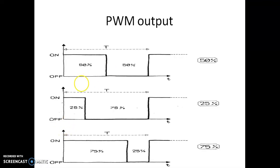This is what is PWM output, so we are talking about analog output. Because this is a digital circuit, it cannot give analog output in the form of 1 volt, 2 volt, 3 volt, 4 volt, VDD directly.